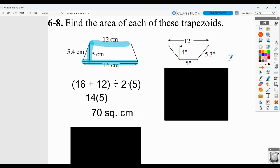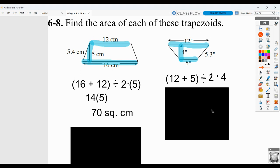Same thing here. This could be your base one and this your base two or the other way around. And again, the formula for area of a trapezoid, base one plus base two. Get that total, then divide by two and multiply by four.